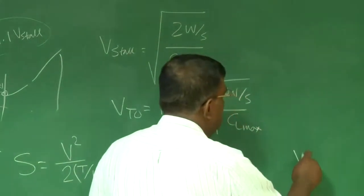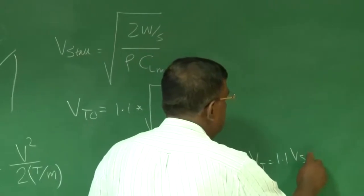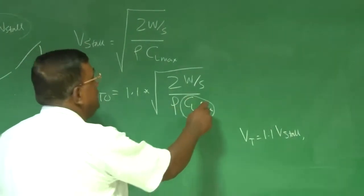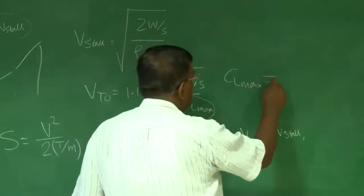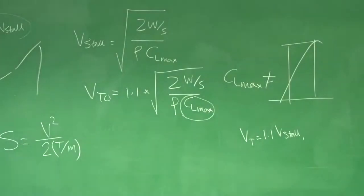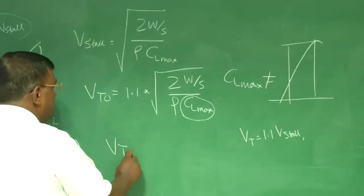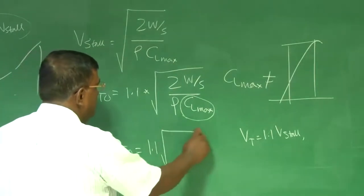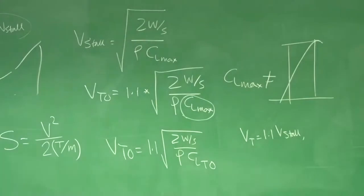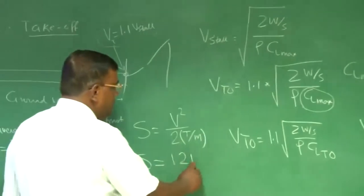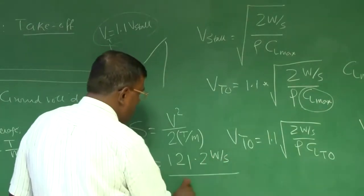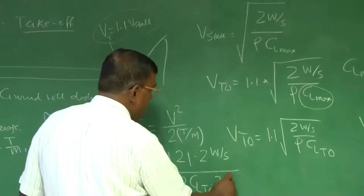But we also understand that since I am taking off at 1.1 times v_stall, the C_L_max is not the C_L_max we are aware of corresponding to v_stall. Because v_takeoff is 1.1 times v_stall, let me write v_takeoff as 1.1√(2W/S / ρC_L_takeoff). If I do this, then I find s = 1.1² × (2W/S) / (ρC_L_takeoff × 2 × T/m).